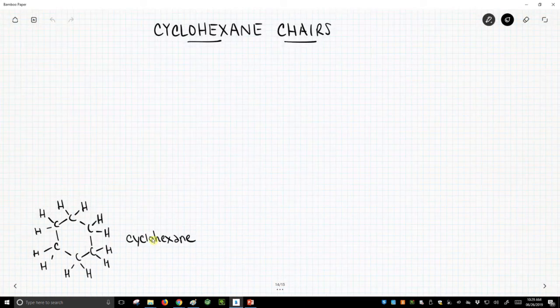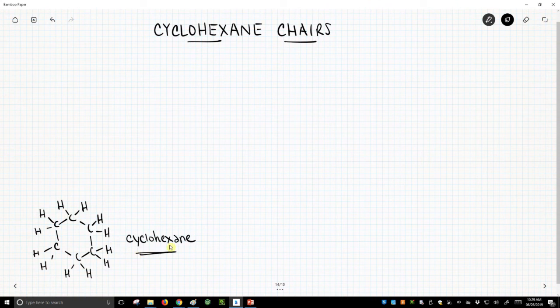In the bottom left of the screen, we have a flat Lewis representation of cyclohexane. We need to draw this in a chair conformation that explains how cyclohexane can apparently have zero strain energy.